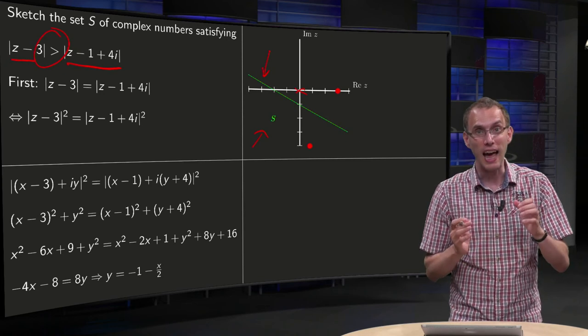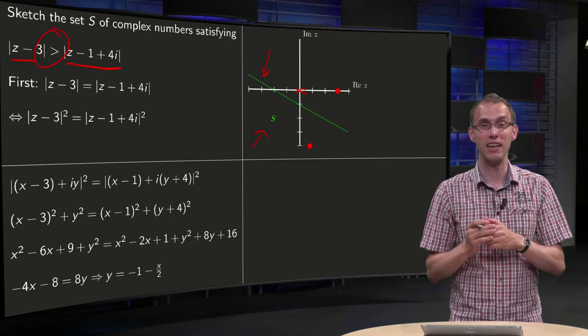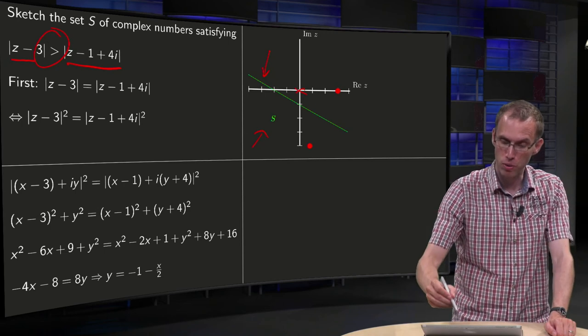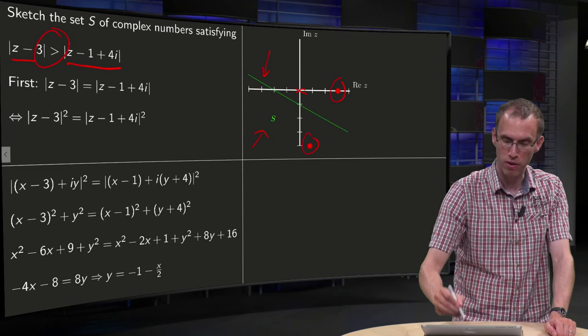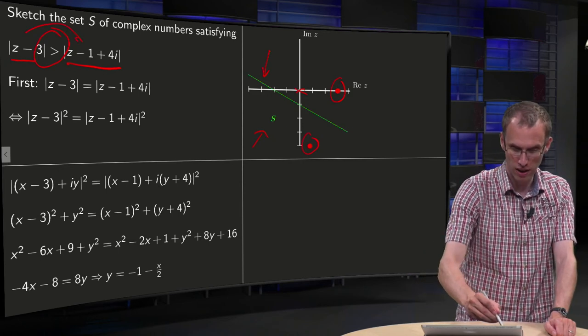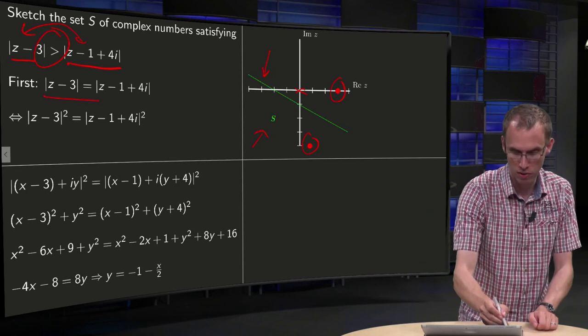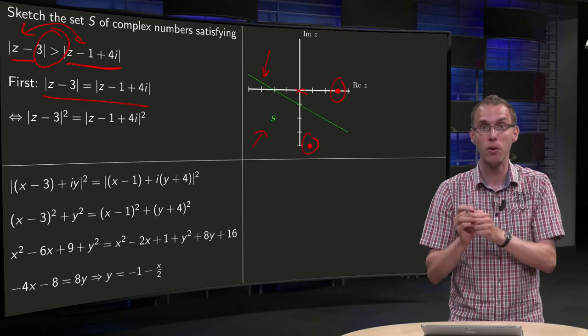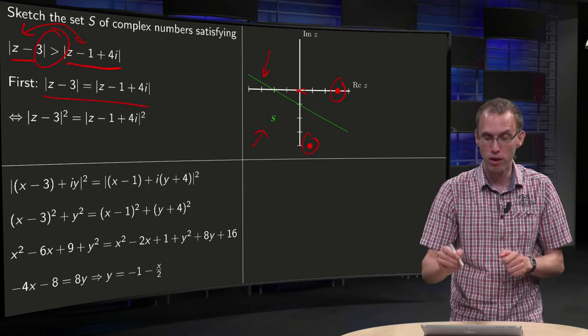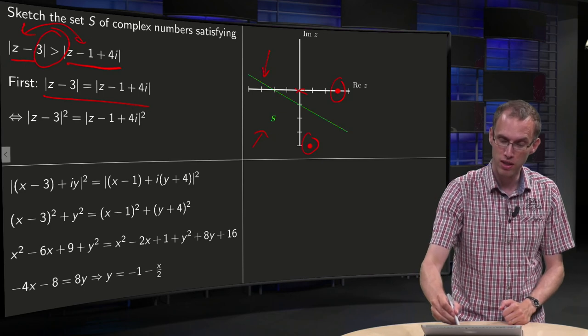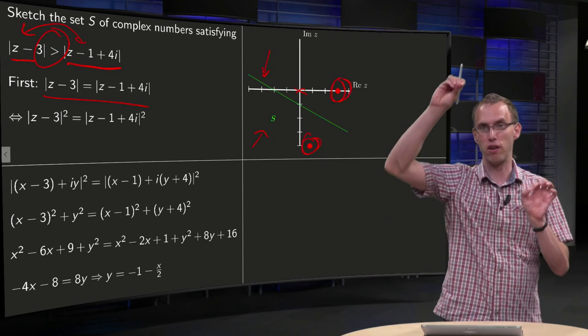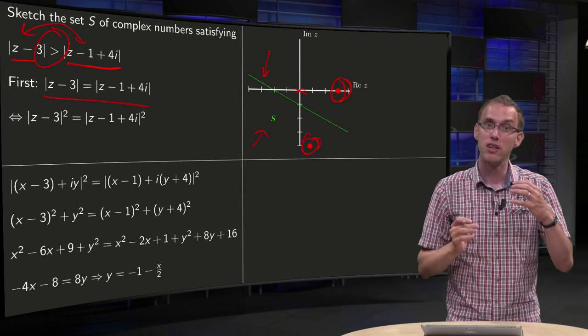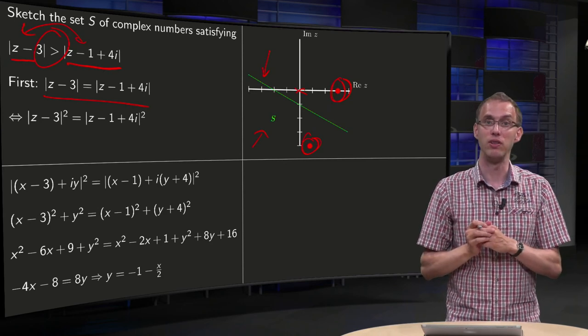In this particular example as an extra, you can also see geometrically why the region S is as it is. We drew the points 3 and 1 - 4i, and this inequality means that the distance from point z to 3 is the same as the distance from z to 1 - 4i. So you're looking for points on the boundary that are equidistant from those two points, and that's of course the line between them.